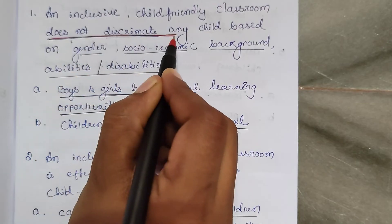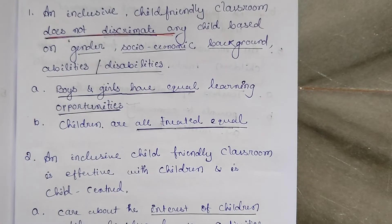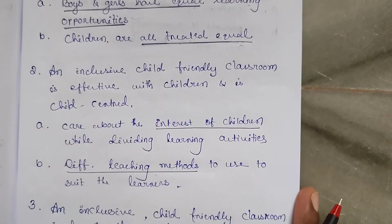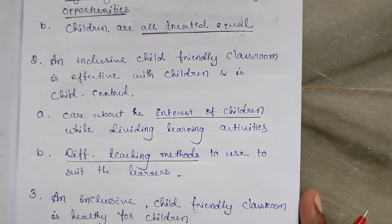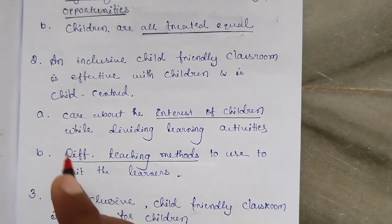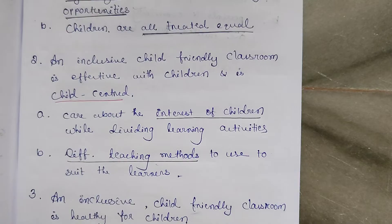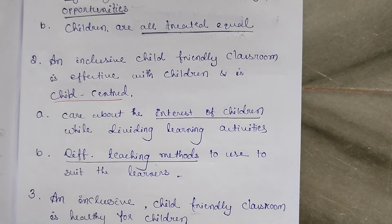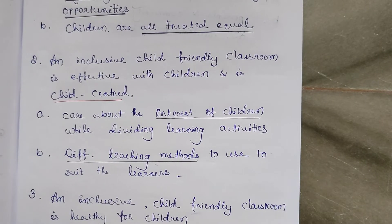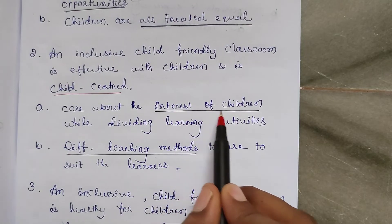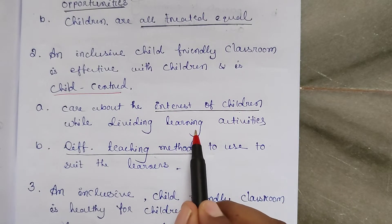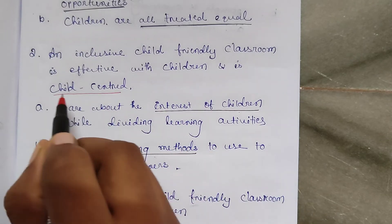The second characteristic: an inclusive child-friendly classroom is effective with children and each child is child-centered. All the learning process is about the child's interest. What does a child need? What is the child's interest? Keeping that in mind, we have to plan our lessons. We should care about the interest of children while designing learning activities — it is child-centered.